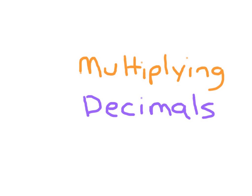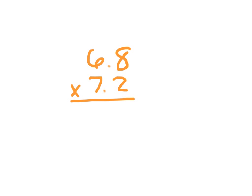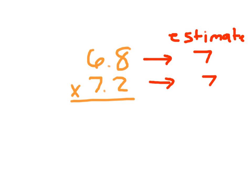Multiplying Decimals. We're given the problem 6 and 8 tenths times 7 and 2 tenths, and we're going to find an estimate for that product. We look at the nearest whole number each factor goes towards: 6.8 is closest to 7, and 7.2 is also closest to 7. We multiply those together to get 49, so we know our answer should be somewhere around 49.